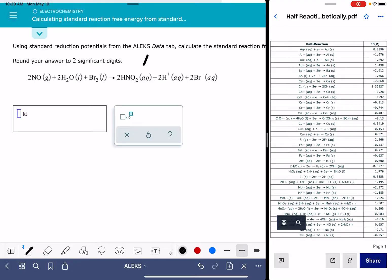To calculate delta G for a redox reaction, we're going to use the equation negative nFE cell standard. In this equation, the E cell is the same E cell that we've been using. It is the cathode minus the anode, which is why I have these half reactions pulled up ready to go. F is a constant, it's Faraday's constant.